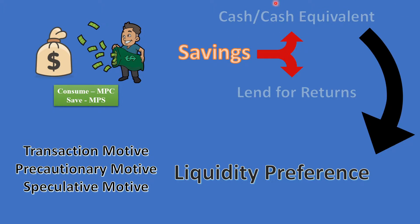In the first case, you can determine how much cash you need. You can determine liquidity preference — this means determining how much cash you need to hold. This is called liquidity preference.